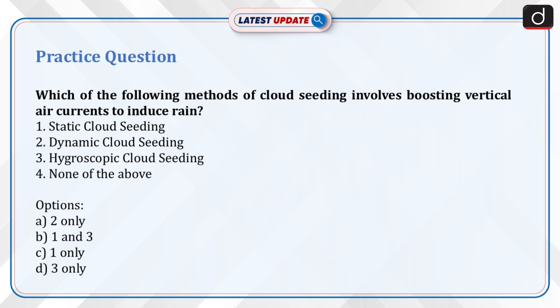Now for a practice question: Which of the following methods of cloud seeding involves boosting vertical air currents to induce rain? 1. Static cloud seeding, 2. Dynamic cloud seeding, 3. Hygroscopic cloud seeding, 4. None of the above. Options: A. Two only, B. One and three, C. One only, D. Three only. Send your answer in the comment section.